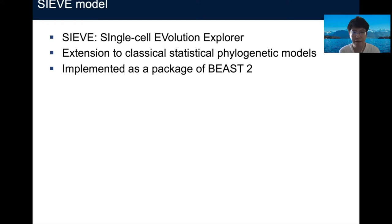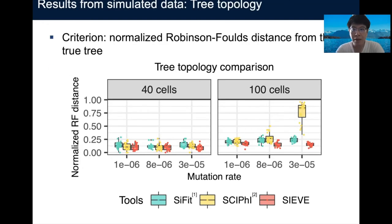Moreover, SCIF is implemented as a package of BEAST2. In order to benchmark SCIF's performance against other readily available published models, which are also applied to single-cell DNA sequencing data, we generated some simulated data with different numbers of cells and mutation rates. Note that we choose one of the mutation rates to 3 times 10 to the power of minus 5 in order to generate enough homozygous mutation genotypes.